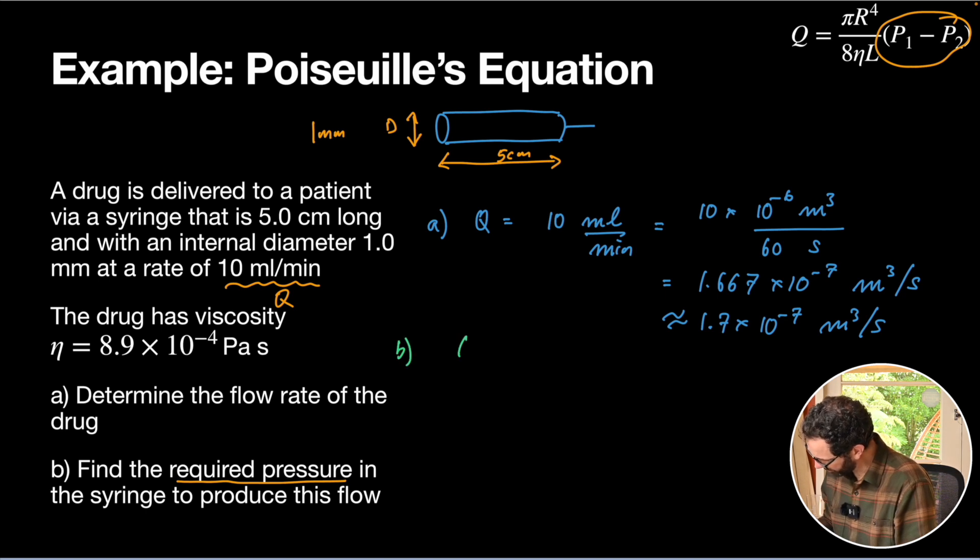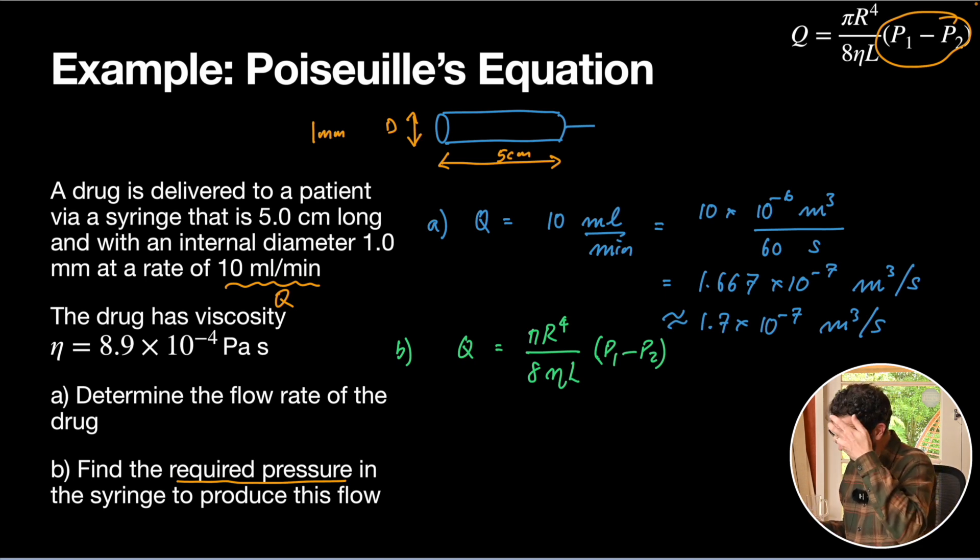My equation starts as being Q equals pi r to the four divided by eight eta L times P1 minus P2. And just for a bit of math practice, we can get rid of a fraction that's multiplying something by multiplying by the reciprocal. So let's just do a quick reminder of what that means up the top here. If I've got a situation like this, three quarters x equals five, and I want x.